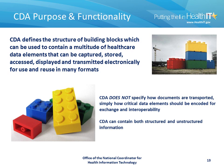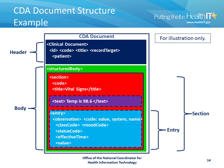The point of CDA, and the functionality of it, is to define a structure of building blocks which can be used to contain a multitude of healthcare data elements that can be captured, stored, accessed, displayed, and transmitted electronically for use and reuse in many formats. CDA does not specify how documents are transported, simply how the critical data elements should be encoded for exchange and interoperability. CDA can also contain both structured and unstructured information. The general structure of the CDA document is consistent between documents that contain structured content. It starts with a header, which sets the context for the document, and then has a body, which may be made up of multiple sections, with each section being made up of zero or more entries.